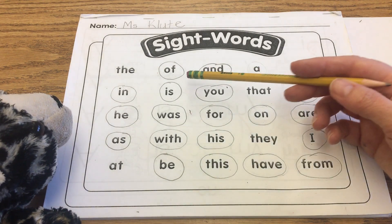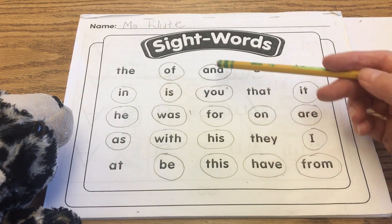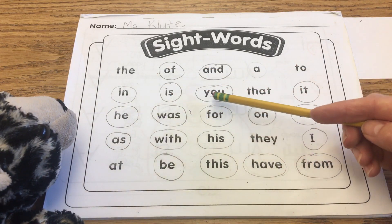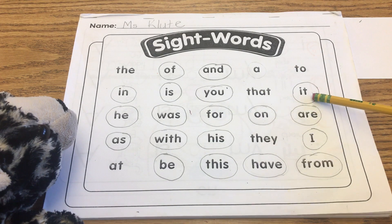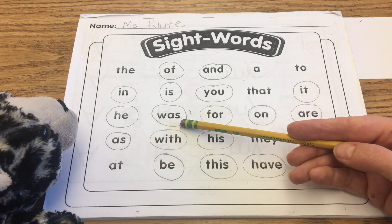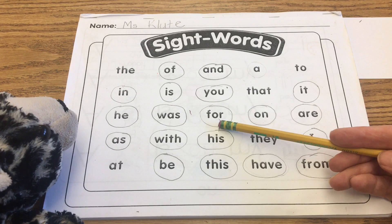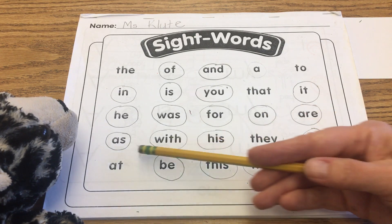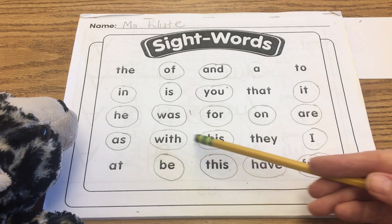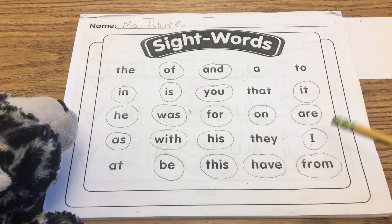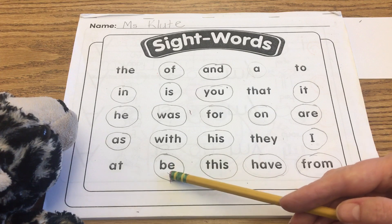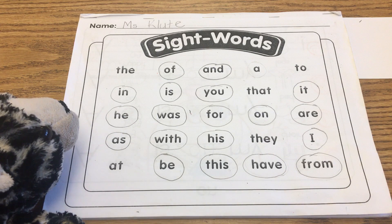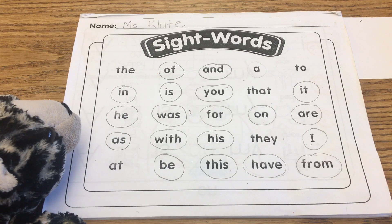Echo reading: of, and, in, is, you, it, he, was, for, on, are, as, with, his, I, be, this, have, for. And today we're going to use the word A.